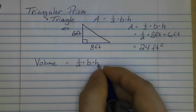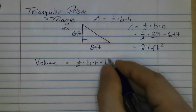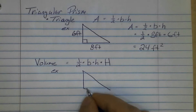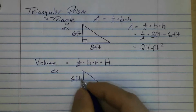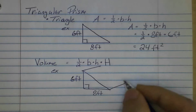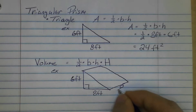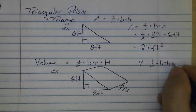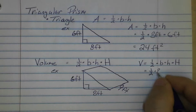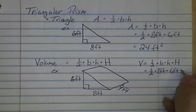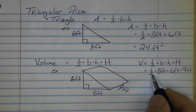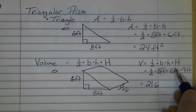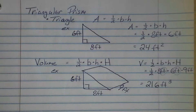For the volume of a triangular prism, we take one-half times base times height — which gives the area of the triangular base — and then multiply by the third dimension: the height of the entire prism. Using the same right triangle with 6 feet and 8 feet, and a prism height of 9 feet: volume equals one-half times 8 feet times 6 feet times 9 feet. 0.5 times 8 times 6 times 9 equals 216 feet cubed.